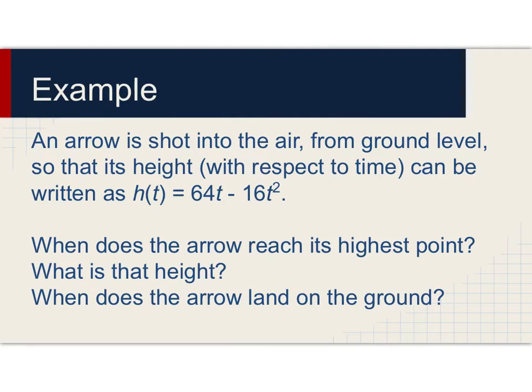Here's an example for us to get started with. Let's say an arrow has been shot into the air from ground level so that its height with respect to time can be written as h(t) = 64t - 16t². When does the arrow reach its highest point? How high is it at that point? And finally, when does the arrow return to the ground?